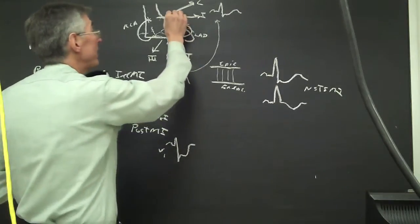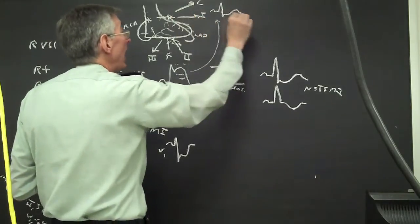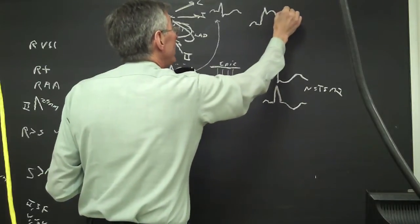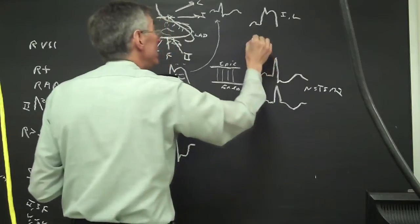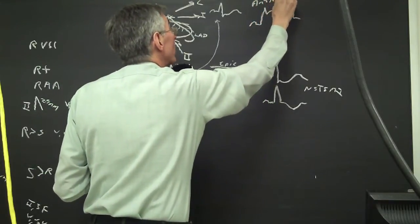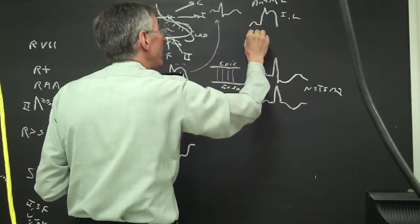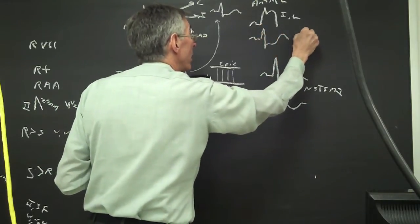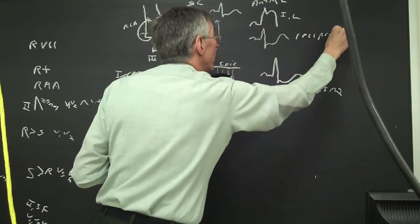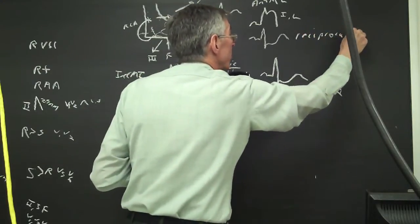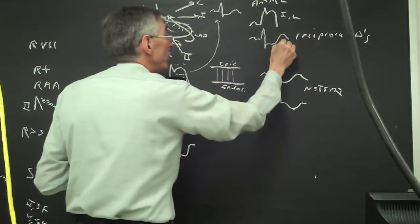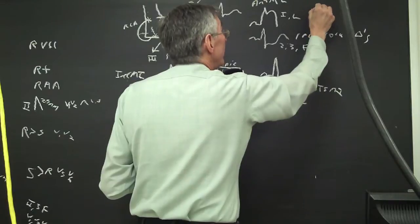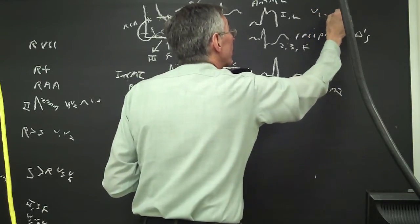If the left anterior descending artery is occluded, I will find anterior MI will give me ST elevation here and one and AVL for an anterior MI. I will see in the inferior leads reciprocal changes in two, three, and F. Also, with anterior MI, I'm going to look in V1 through V6.